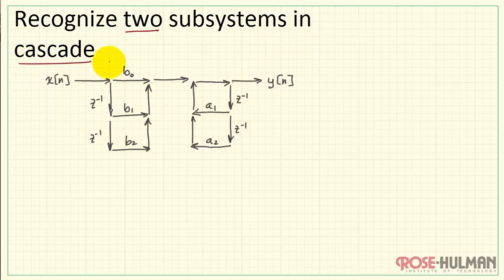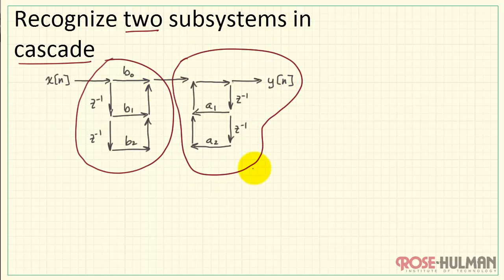As we look at the Direct Form 1 implementation, we see that we really have two subsystems in Cascade. Let me circle a contour around each of these subsystems. I'll define this as subsystem 1, call that H1 of Z, and subsystem 2, H2 of Z.